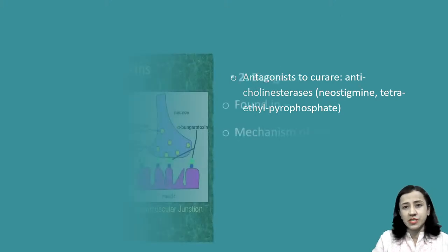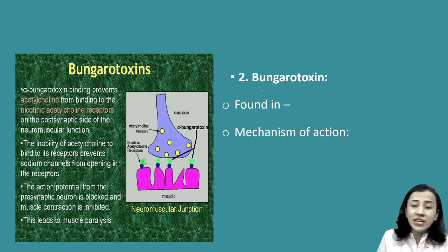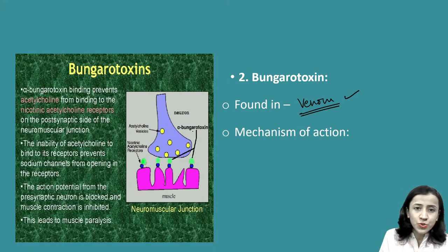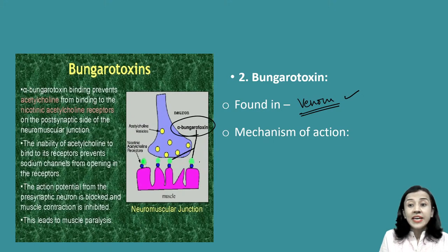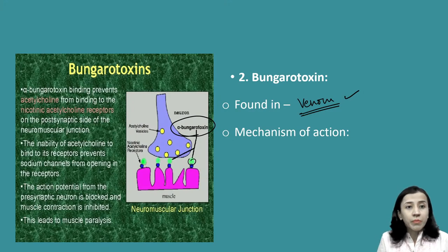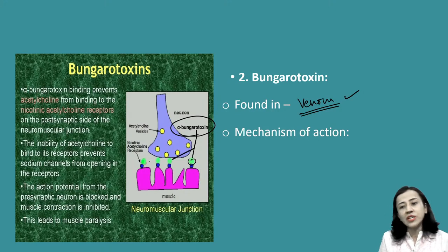Next is bungarotoxin, commonly found in the venom of a dead snake — snake venom. The mechanism of action: bungarotoxin binds with the receptors on the post-synaptic membrane. It blocks the neuromuscular transmission by binding with the receptors, and prevents acetylcholine from binding to the nicotinic receptor on the post-synaptic membrane. So acetylcholine cannot bind — it is also a form of competitive inhibition.